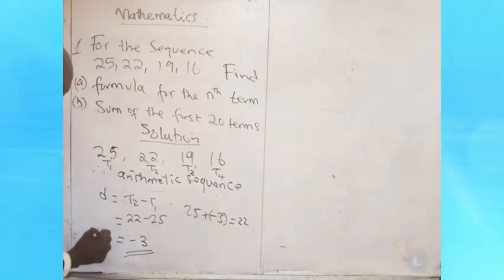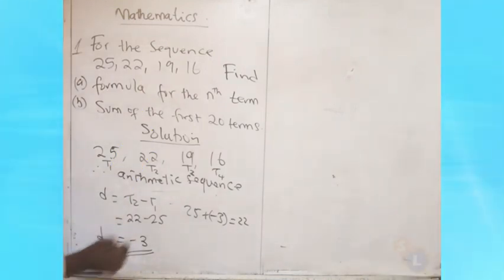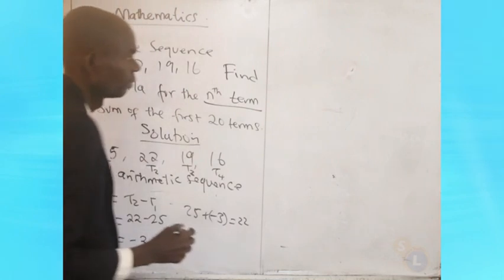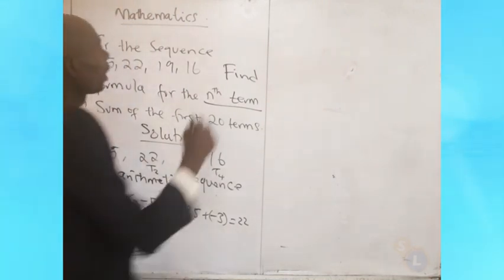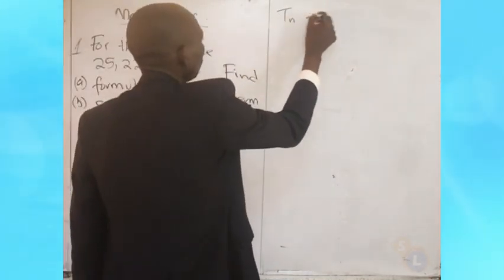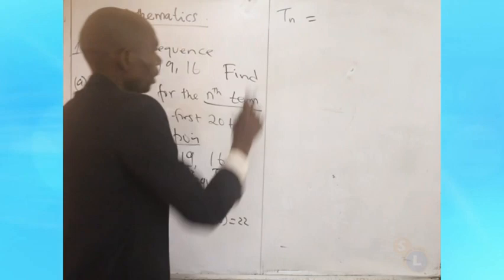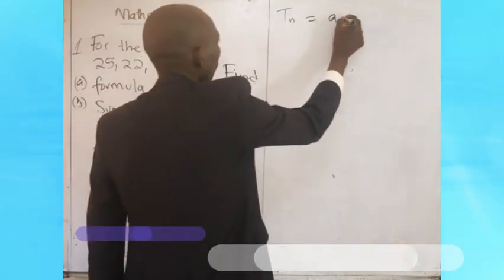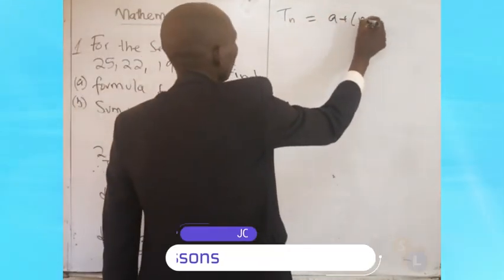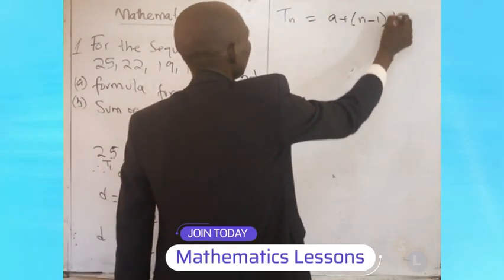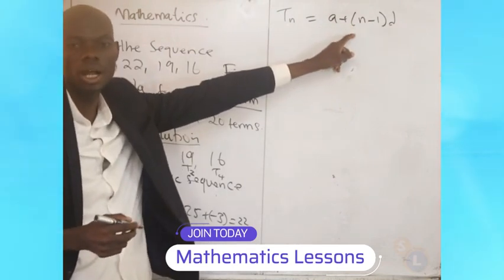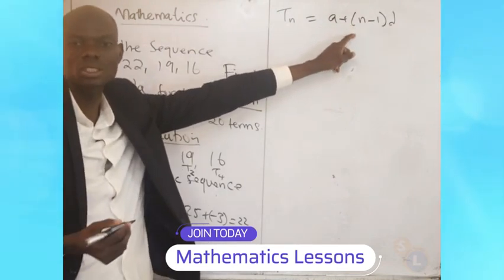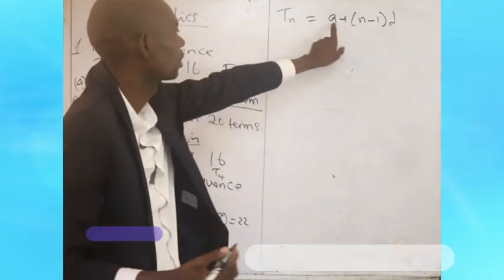Now we know what we call the common differences. To find the nth term, we apply the formula: term n, which is a plus (n minus 1) times b. This is the formula that we use in arithmetic sequences or arithmetic progressions.